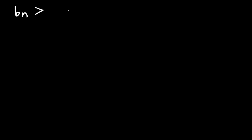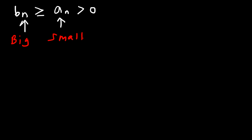In this video, we're going to talk about the direct comparison test. So let's say if we have the sequence B sub n, and it's greater than or equal to A sub n, which is greater than zero. So B sub n we can describe as the big sequence, and A sub n is the small sequence.